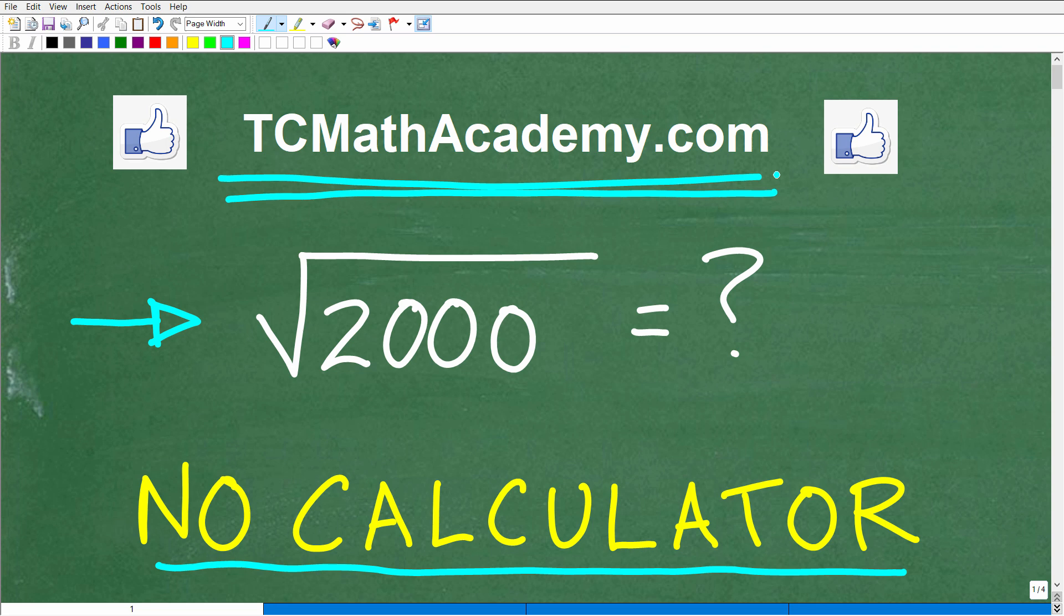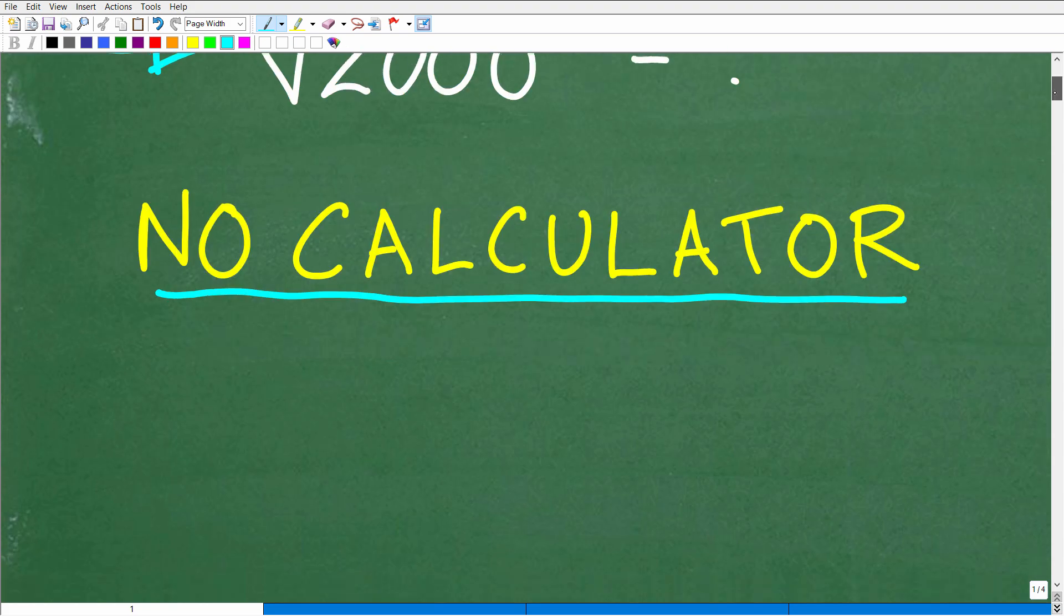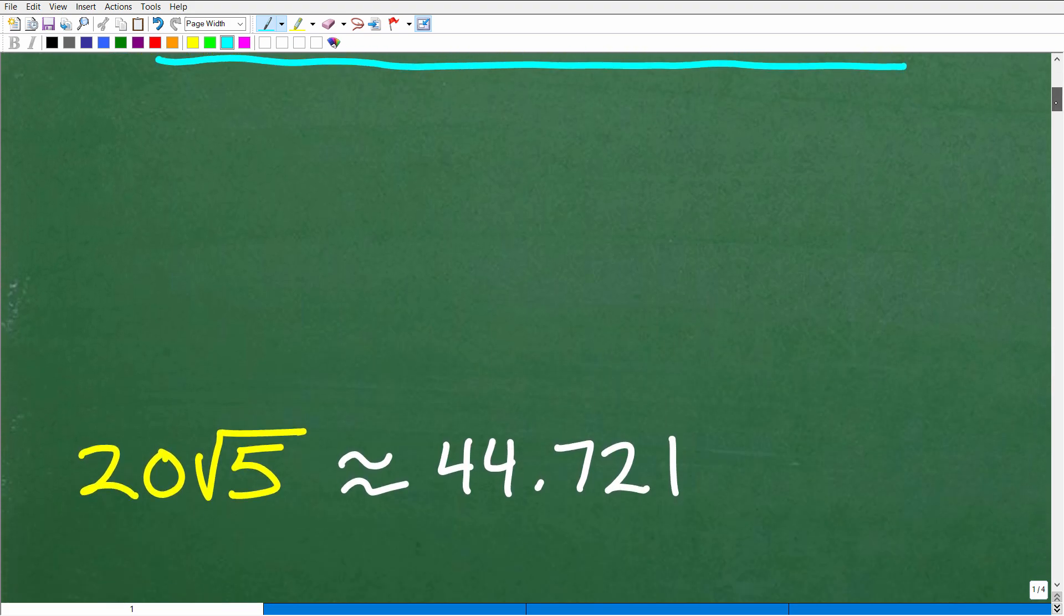And if this video helps you out, don't forget to like and subscribe, as that definitely helps me out. Okay, so the square root of 2,000 without the aid of a calculator. What is the answer? Well, let's go ahead and take a look at it right now.